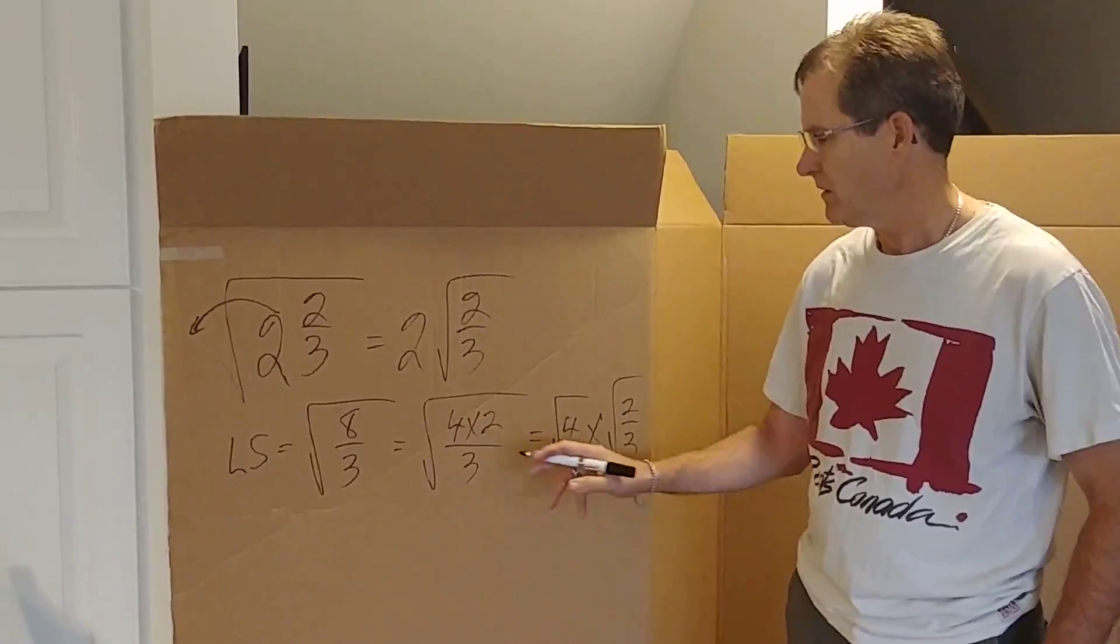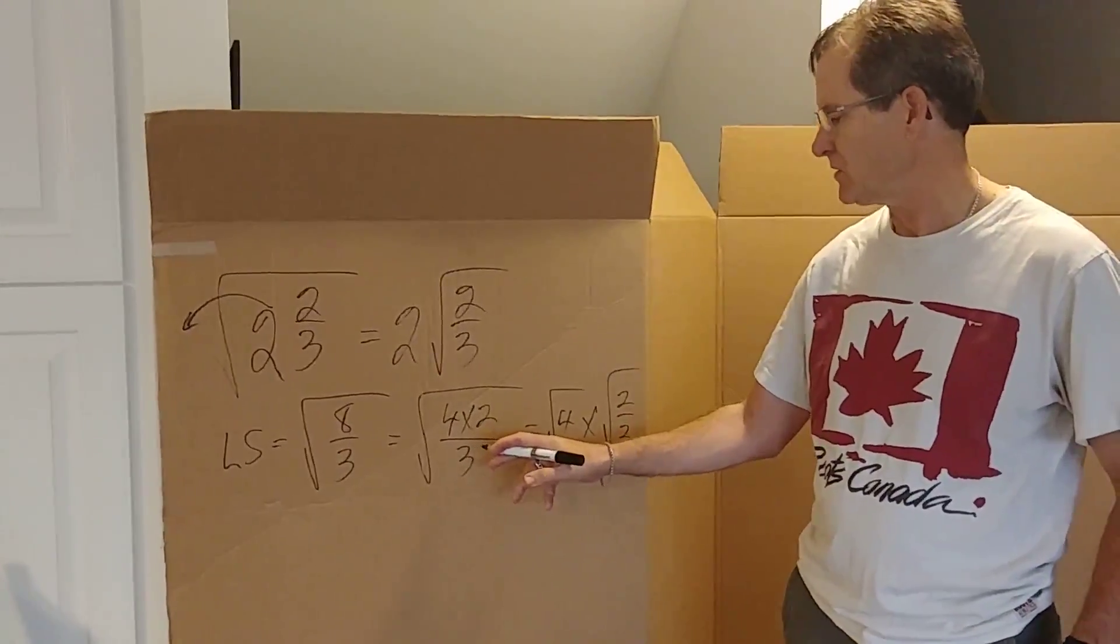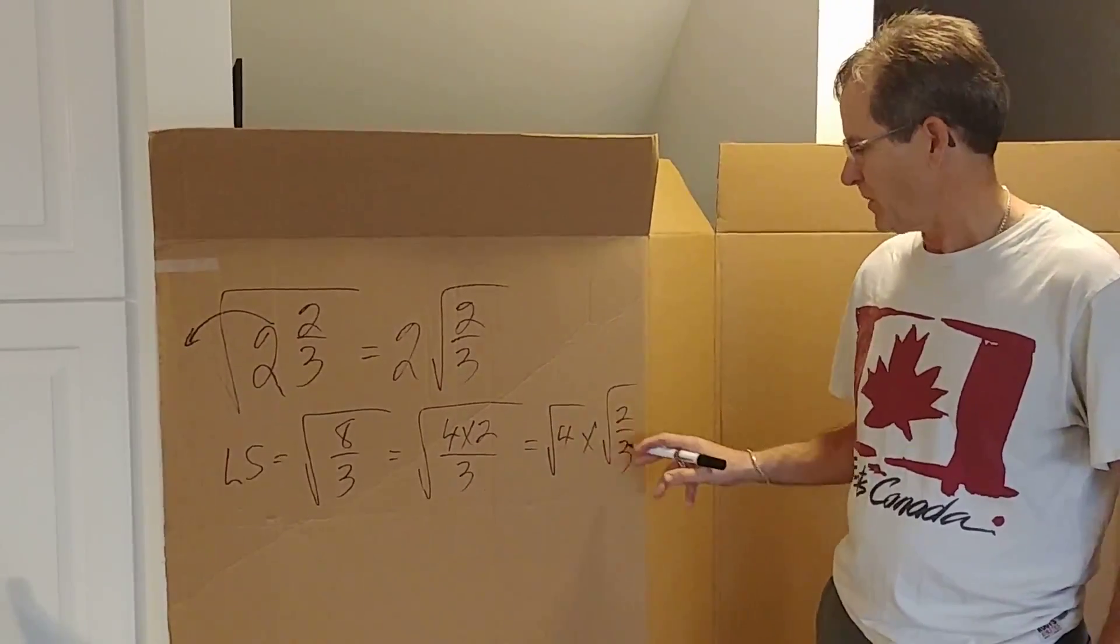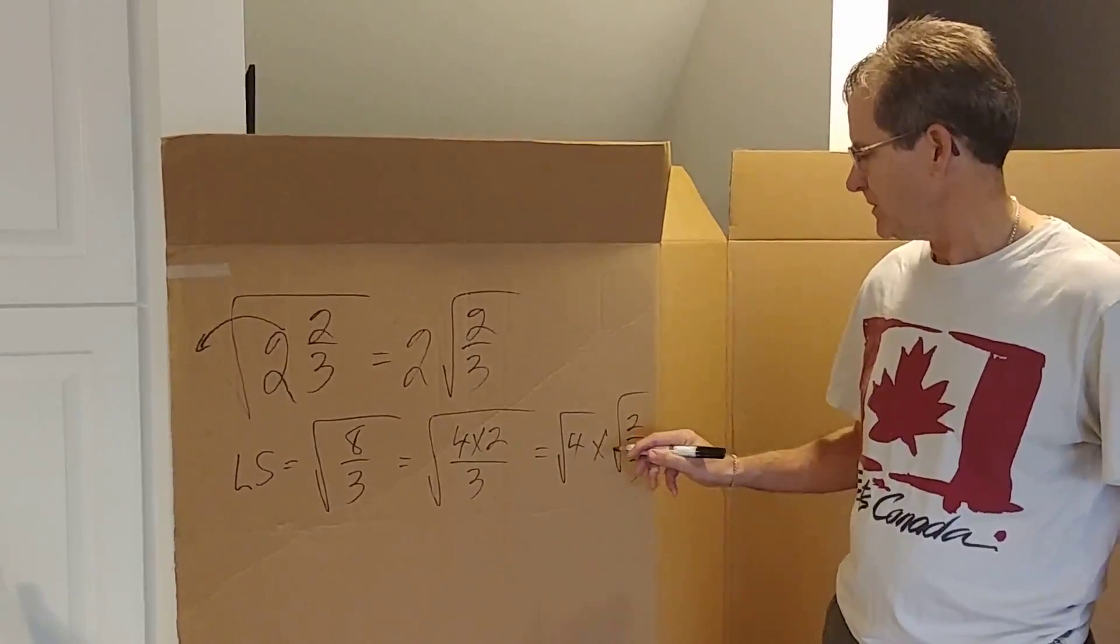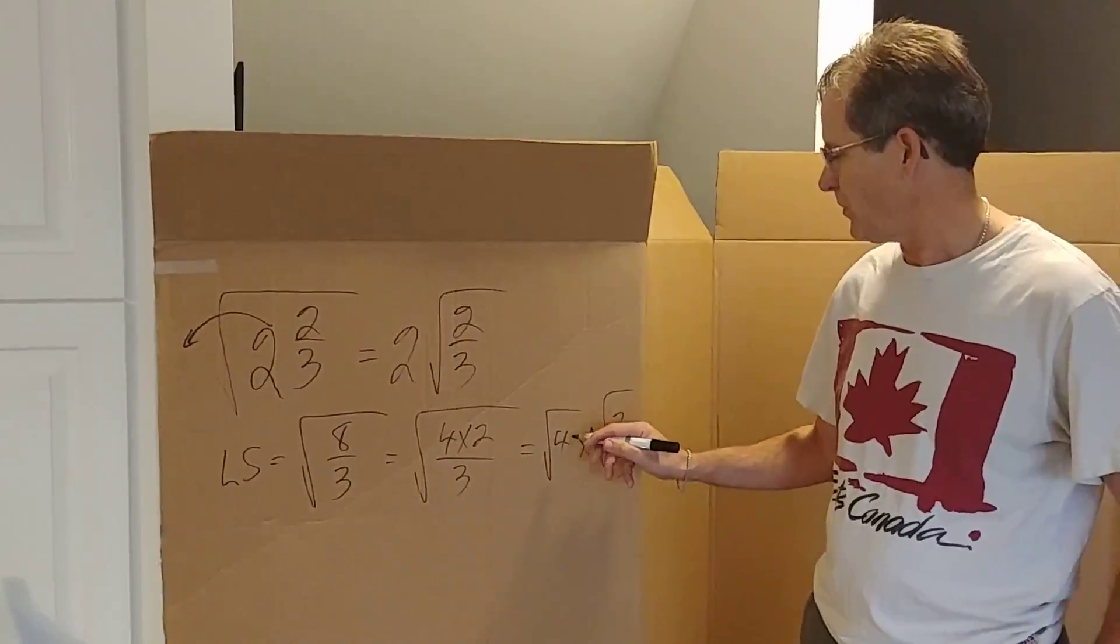You can check that on a calculator. If you do the numbers inside then take the square root or separate the square roots and calculate you get the same answer. But then the root of 4 is 2.